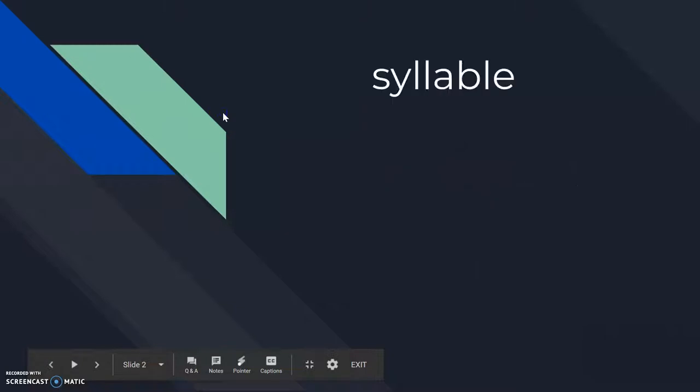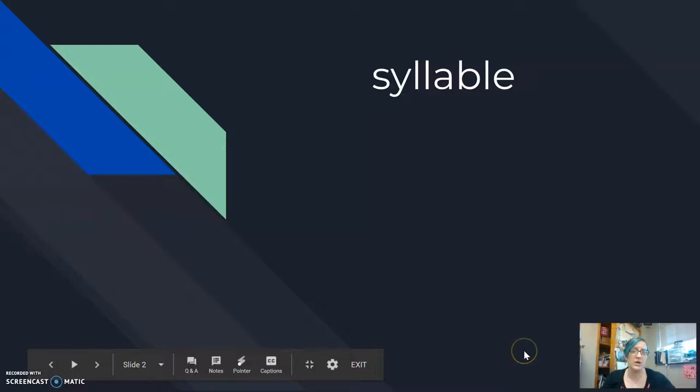Important things that we need to review before we jump into this topic is the idea of syllable. So remember that syllable is a piece of a word. For example the word syllable has three pieces: sy-la-ble. There's three syllables in the word syllable.